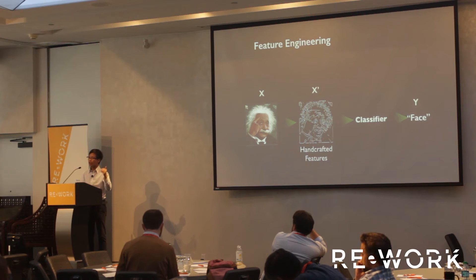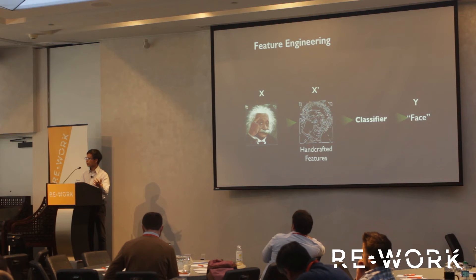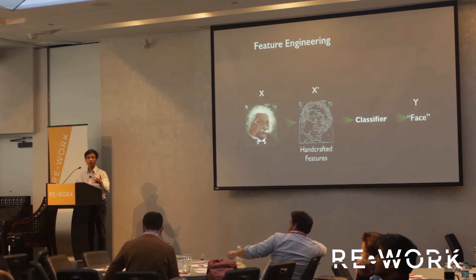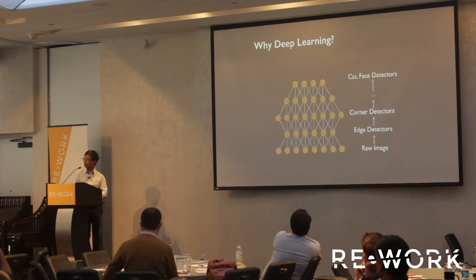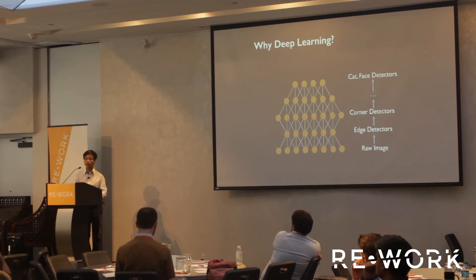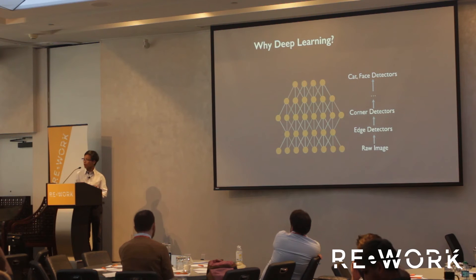If you want to extrapolate those features and ask whether you can use them to detect spam emails, the answer is no. You really need to hire other people to come up with those features. At Google, we became interested in the problem of feature learning — we want a system that does not need a human in the loop to invent features. We became interested in a class of models called neural networks.